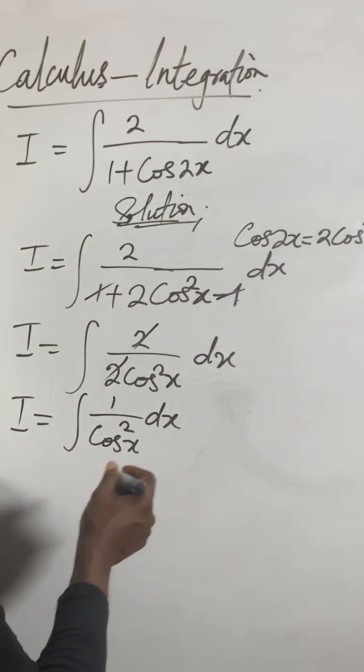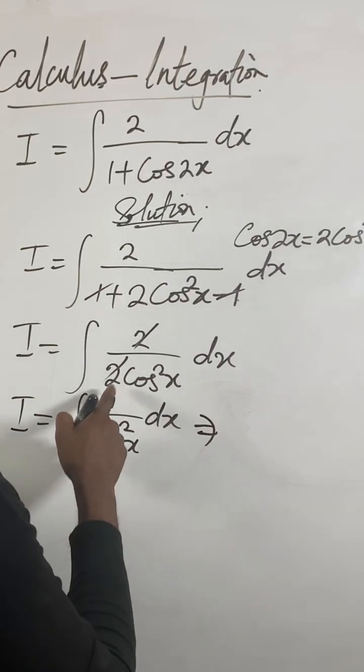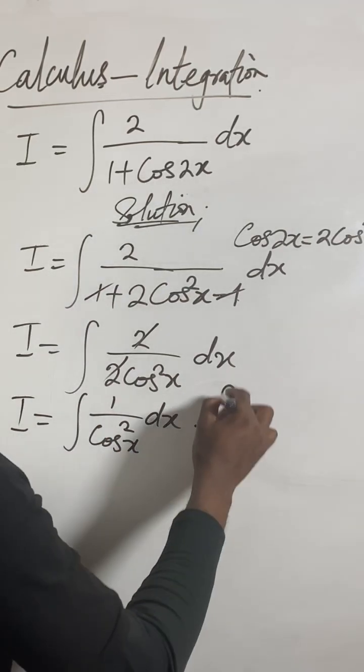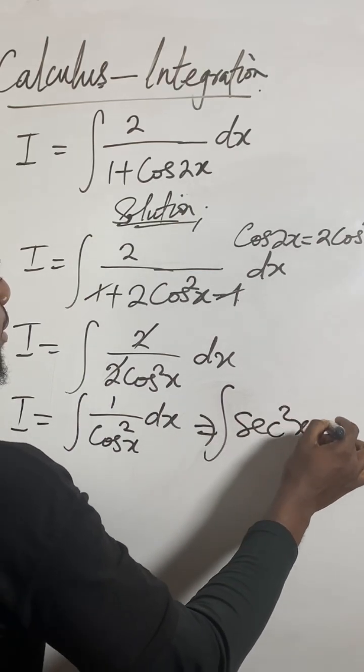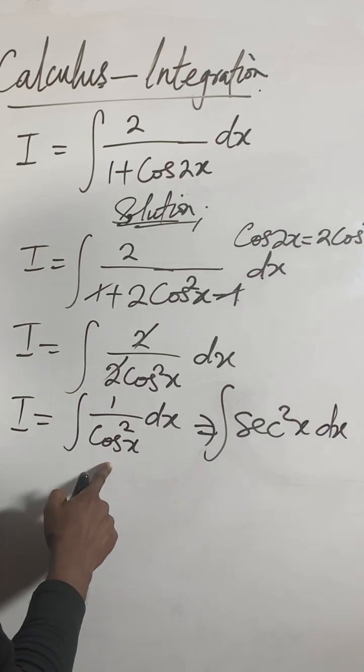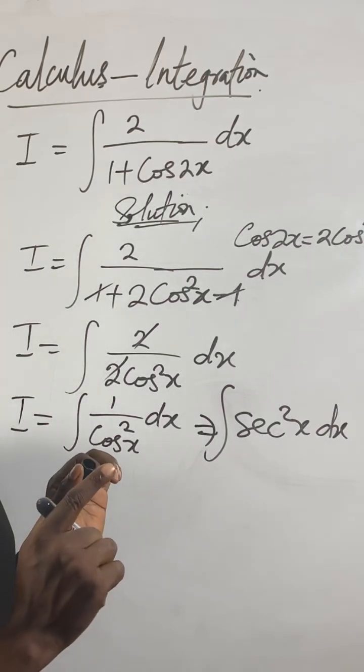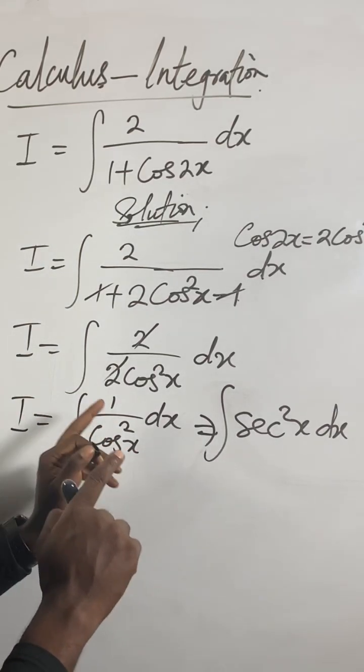So if you're going to get inverse of cos²x, it means you will get sec²x. Remember, inverse of ordinary cos will give you sec. Inverse of cos²x will give you sec²x. You understand?